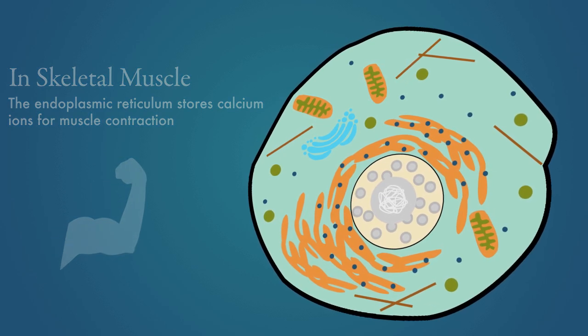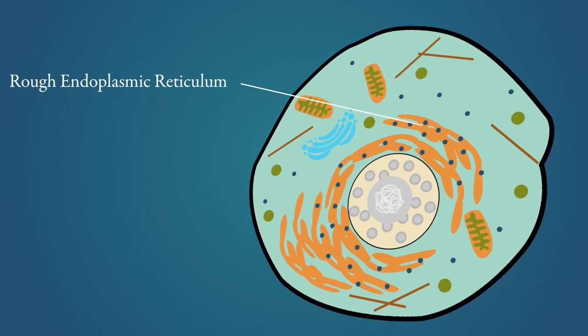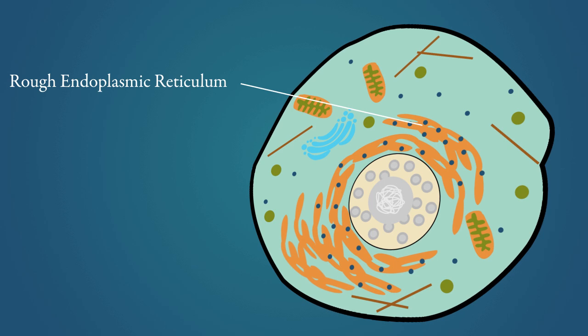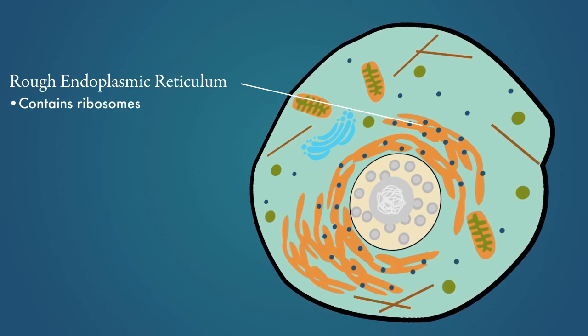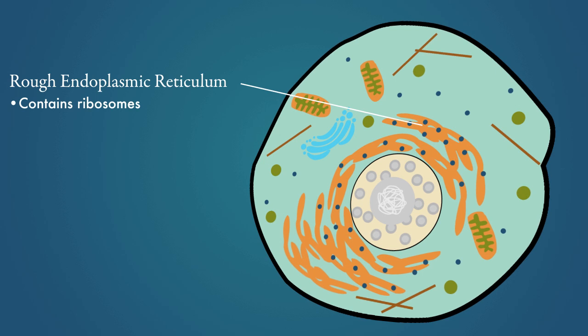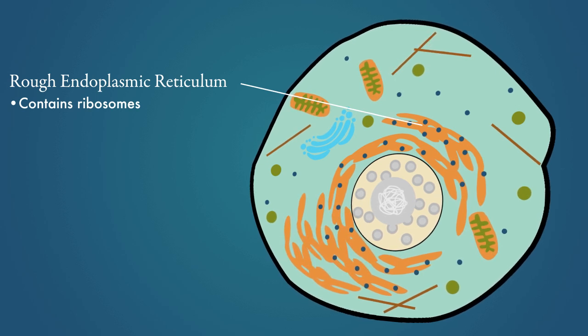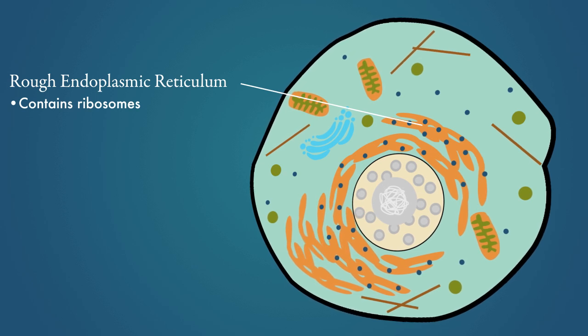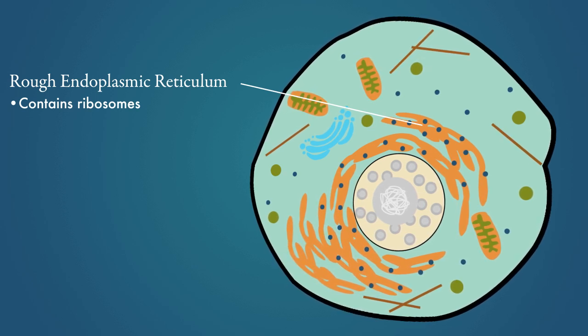There are two types of endoplasmic reticulum. The rough endoplasmic reticulum appears rough and has ribosomes embedded in it. Ribosomes attached to the rough ER produce proteins that can be quickly packaged by the ER and either used in the cell or exported out of the cell.